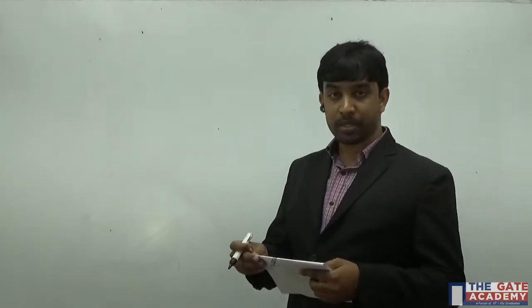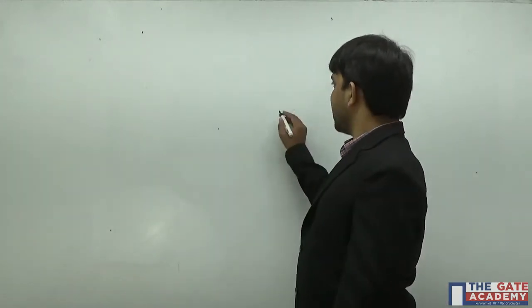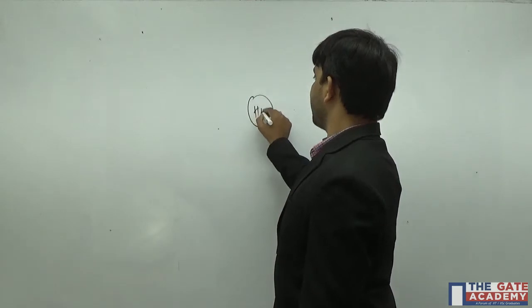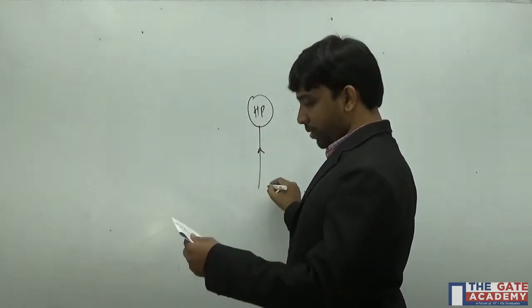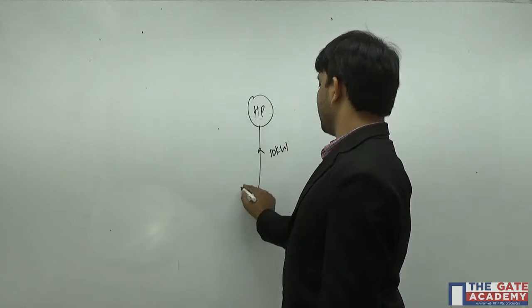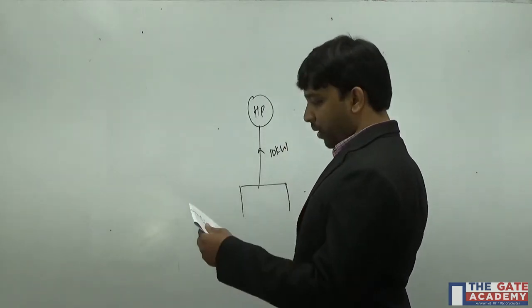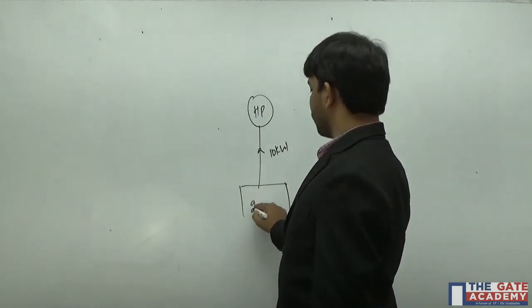Question number 16. A heat pump absorbs 10 kilowatt of heat from outside environment which is at 250 Kelvin. The heat pump absorbs this 10 kilowatt of heat from the surroundings at a temperature of 250 Kelvin.